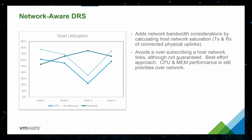Also new to the Distributed Resource Scheduler, DRS, is that it's now network aware. It considers network bandwidth by calculating host network saturation, helping you avoid over-subscribing a host's network links. This ensures that you don't end up with server VMs requiring excessive bandwidth all residing on the same host. Instead, it will keep VMs distributed across hosts to even out the network load across the cluster.